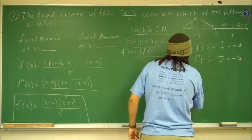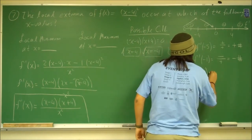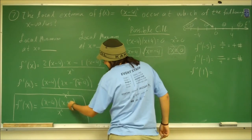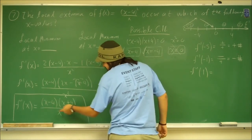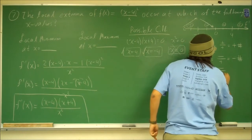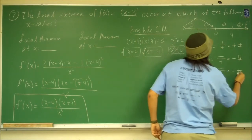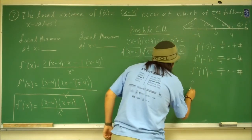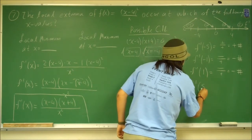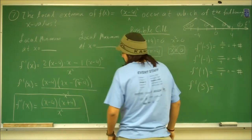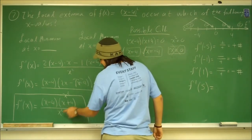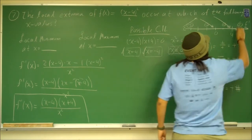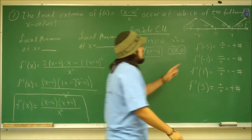Now f prime of 1: 1 minus 4 is negative, 1 plus 4 is positive, so negative times positive is negative, divided by positive is negative. So from 0 to 4, the function is also decreasing. Now f prime of 5: 5 minus 4 is positive, 5 plus 4 is positive, and x squared is positive. Positive divided by positive is positive — so from 4 to infinity, the function is increasing.